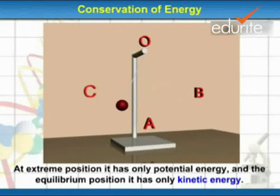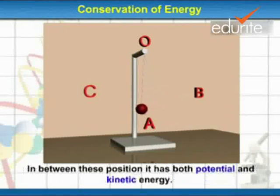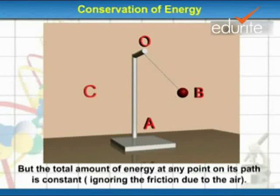At extreme positions, it has only potential energy, and at the equilibrium position, it has only kinetic energy. In between these positions, it has both potential and kinetic energy. But the total amount of energy at any point on its path is constant, ignoring the friction due to air.